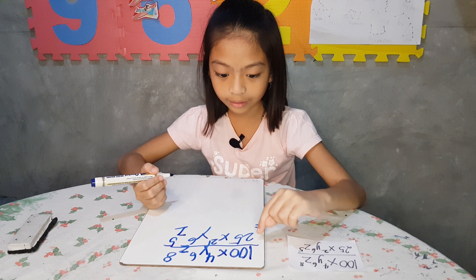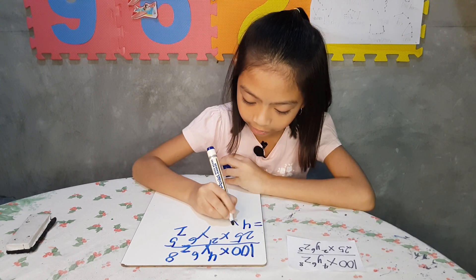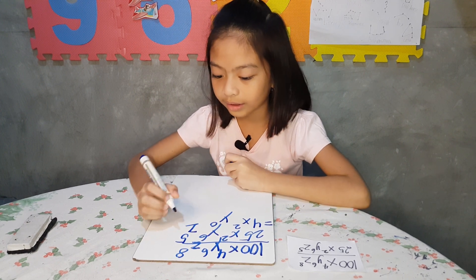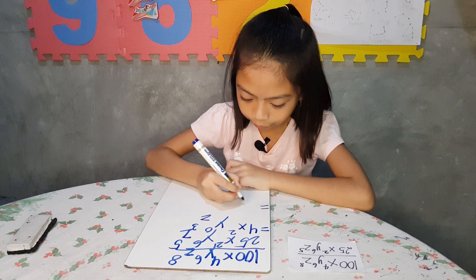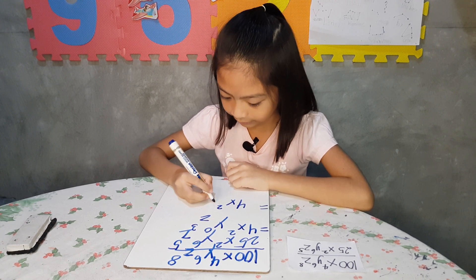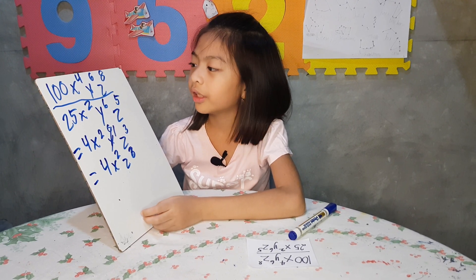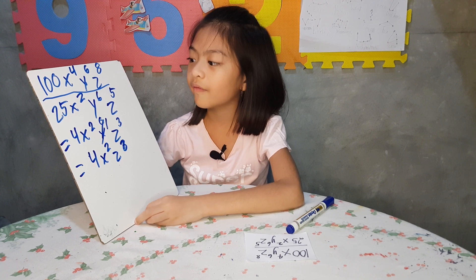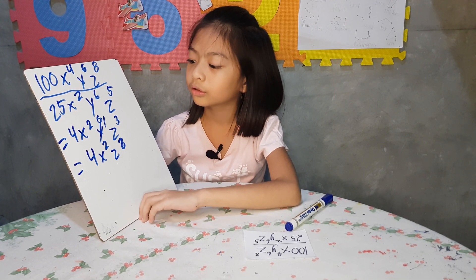So, 100 divided by 25 equals 4. And 4 minus 2 equals 2, don't forget to write the x. And 6 minus 6 equals 0. And then 8 minus 5 equals 3, don't forget to put the letter. And then it's going to be equal to 4x squared z cubed. So, the answer of 100x to the 4th power y to the 6th power z to the 8th power divided by 25x squared y to the 6th power z to the 3rd power equals 4x squared z cubed.